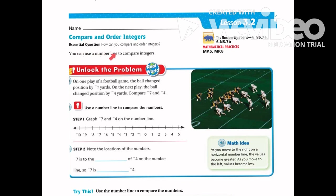You can use a number line to compare integers. Let's unlock the problem. On one play in a football game, the ball changed position by negative 7 yards. On the next play, the ball changed position by negative 4 yards. Compare negative 7 and negative 4 using a number line.